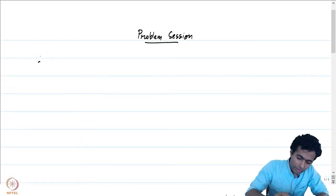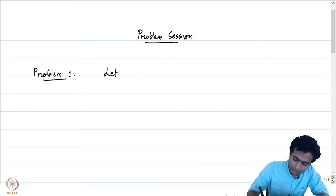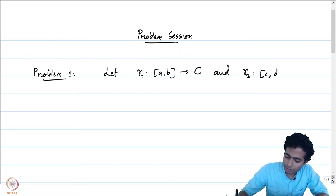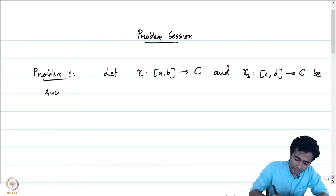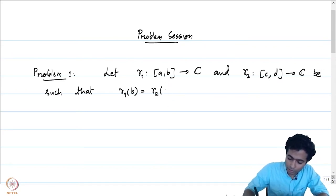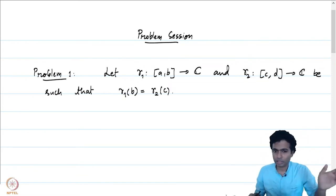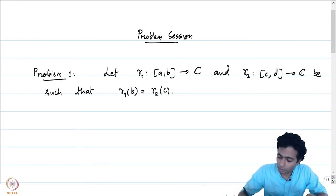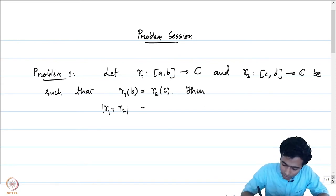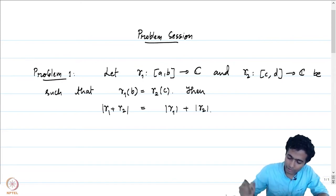Let me write down the problem and then prove it. Problem 1: Let gamma 1 be a curve from the interval [a, b] and gamma 2 be a curve from [c, d] into ℂ, such that the terminal point of gamma 1 — that means gamma 1 of b — is equal to the initial point of gamma 2, meaning gamma 2 of c. Hence we can talk about the concatenation of gamma 1 and gamma 2. Then the arc length of gamma 1 plus gamma 2 equals the sum of the arc length of gamma 1 and the arc length of gamma 2.